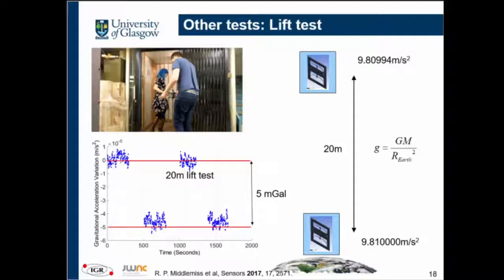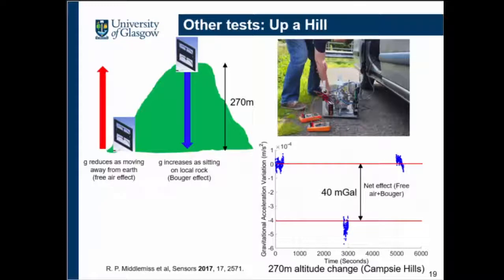If we can take our devices in a lift, why not take them over a hill? So we actually did that measurement. We measured the average gravity at the base, went up, and measured again. An interesting aspect is that as you move up, gravity decreases due to the free-air effect — but because you are sitting on a large mass of rock, that mass adds its own gravitational pull. So the measured value is a combination of both effects: the free-air effect where gravity decreases with altitude, and the Bouguer effect from the local mass.